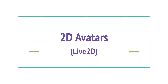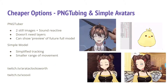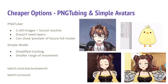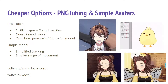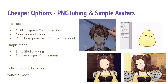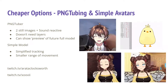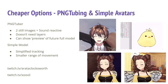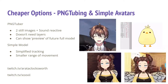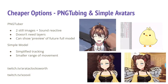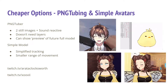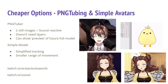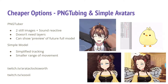For 2D avatars the program used is Live2D. Starting with cheaper options: the first two are PNG tubing and simple avatars. You'll often see VTubers that use two still images — PNG tubing — instead of a full model. These are sound-activated, and there's a tutorial in the resources section if you'd like to set this up. People planning on using a fully tracked model will sometimes just use two images of their character design as their model is being created.